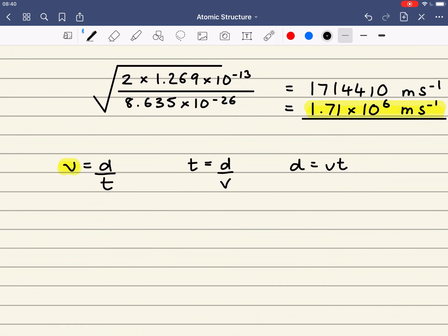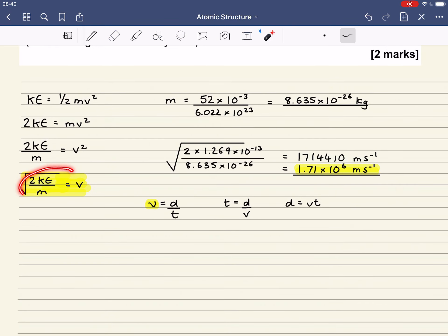If the question gives you time you can work out distance by using the following equation. So if you're ever in a question asked to work out the time that the ion takes to reach the detector, or the distance it travels in the flight tube, the first thing we normally have to do is work out the velocity using this equation. And then if you need to work out time and you're given a distance you use this. If you've been asked to work out distance and you've been given a time value in the question you would use this.